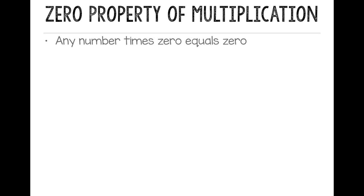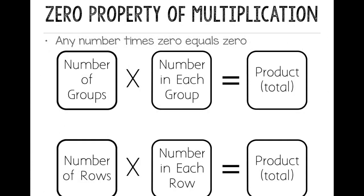Now the zero property of multiplication says that any number times 0 equals 0. And remember we do our number of groups multiplied by the number in each group to get our product, or the number of rows times the number in each row for our total.